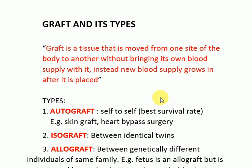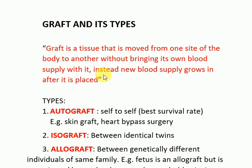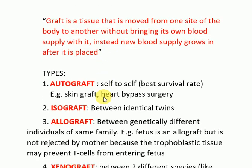We are going to discuss the graft and its types. A graft is a tissue that is moved from one side of the body to another without bringing its blood supply with it; instead, new blood supply grows in after it is placed. Whenever blood supply is not taken with the tissue, it is called a graft. Whenever we take blood supply with it, we call it a flap, not a graft. Once placed at another site, it develops a blood supply of its own.